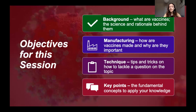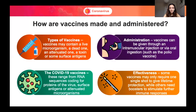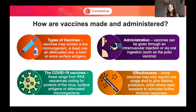Now, moving on to our next learning objective, looking at how vaccines are manufactured and why they are important. There are different types of vaccines. They may contain a live microorganism — those are called live vaccines. There could be vaccines which contain a dead microorganism or an attenuated microorganism — the pathogen that causes disease in normal humans, but attenuated in order not to cause disease in the vaccinated people.